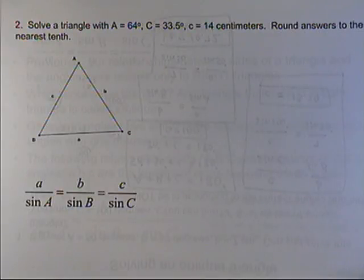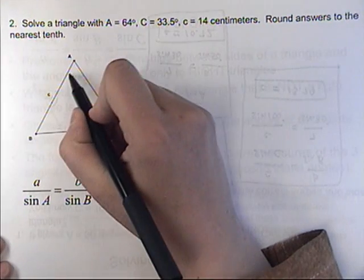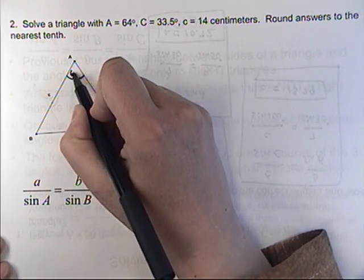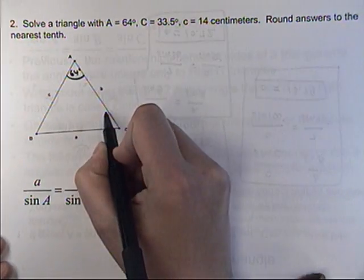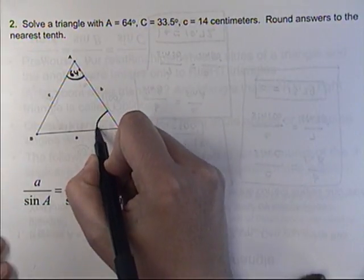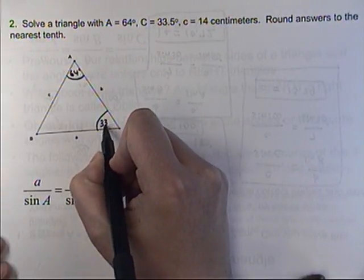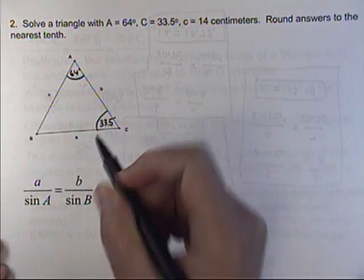Here's example two. Again, I like to label my angles. Big letter A is corner A, so that's 64 degrees. Big letter C is corner C, which they say is 33.5 degrees.